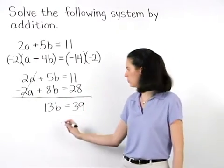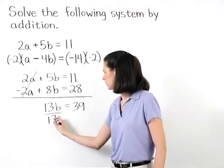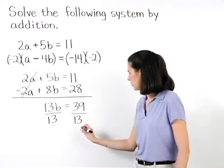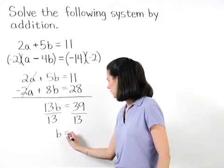Dividing both sides by 13, we find that b equals 3.